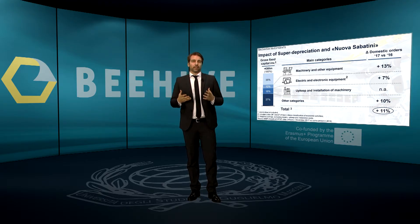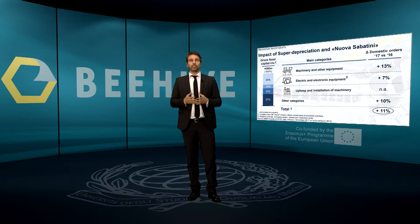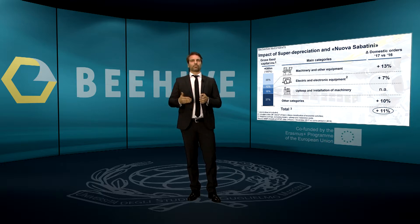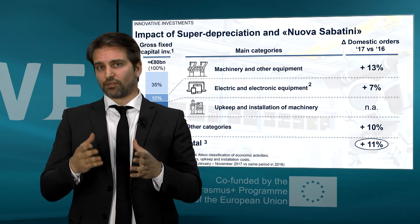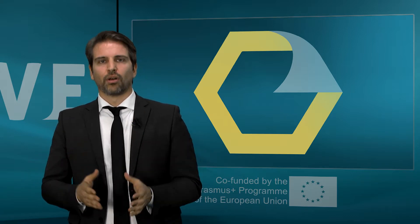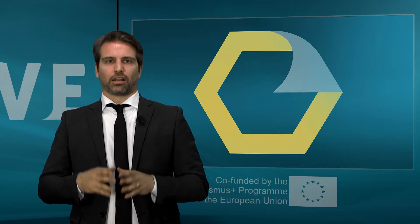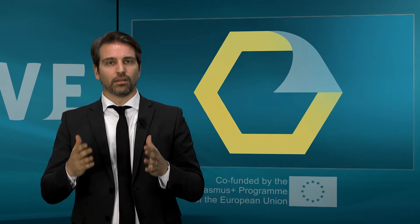The Italian National Plan represents one of the best models in Europe that accompanies enterprises in improving their productivity, their competitiveness, the digitalization of their industrial processes, and the development of new skills, services, and products. Of course, the success of the plan depends on the extent to which entrepreneurs will be able to take advantage — in a logic of transformation and a change of their mindset — of the measures that have been put in place.